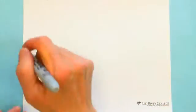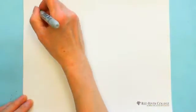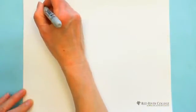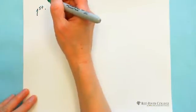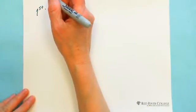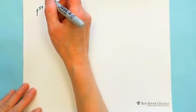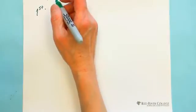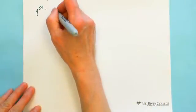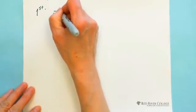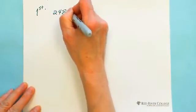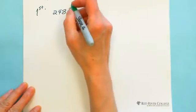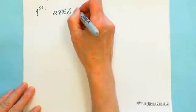First of all, the first trick — I'm going to talk about a number divided by 2. For example, we have 2486 divided by 2.